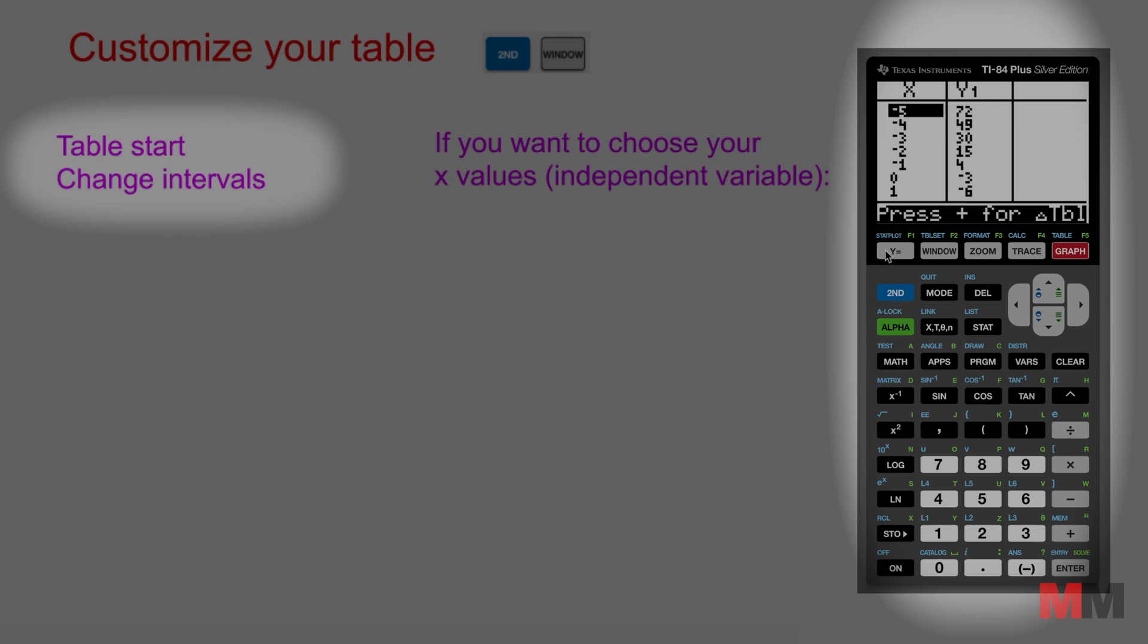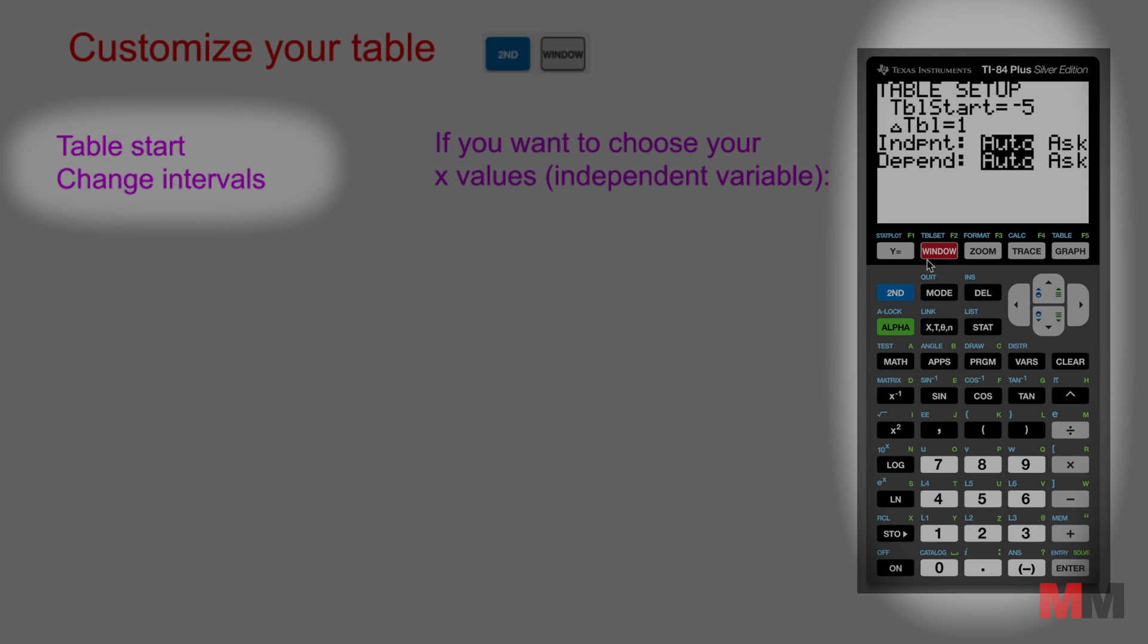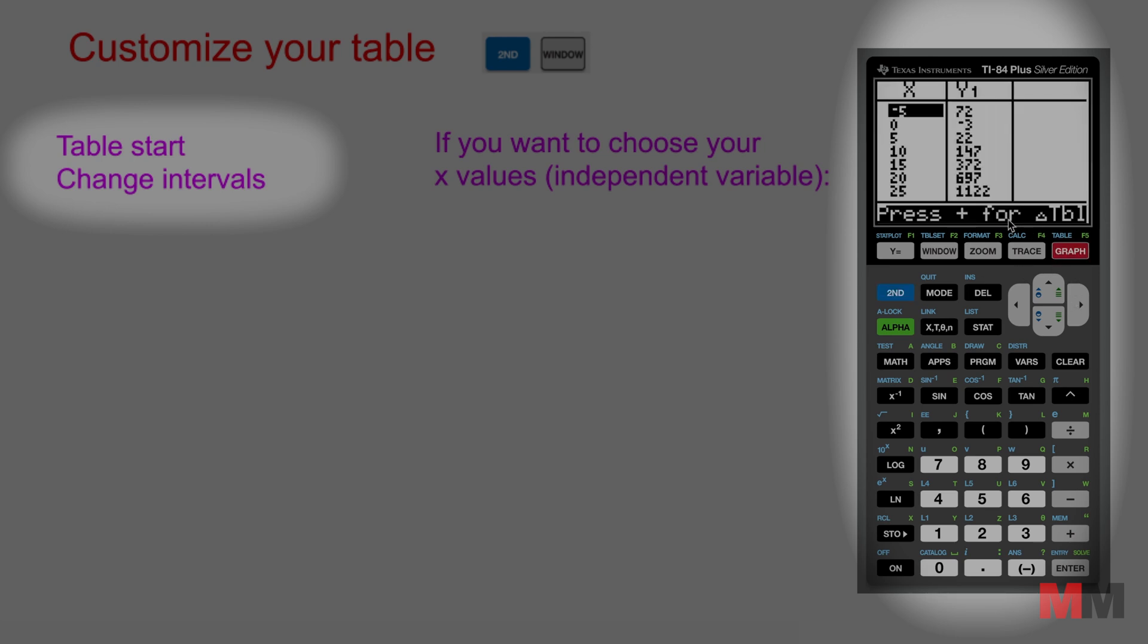Here's the second thing that you can change about your table. Go back to 2nd window to have those options and let's say instead of counting by 1's I want to count by 5's in my table. Change that to 5. Go back to your table by pressing 2nd graph and now look at these values. The x values are now counting by 5's instead of 1's so you could change that to whatever interval you want. That's really useful when you're trying to customize your graph or whatever it is that you're doing.